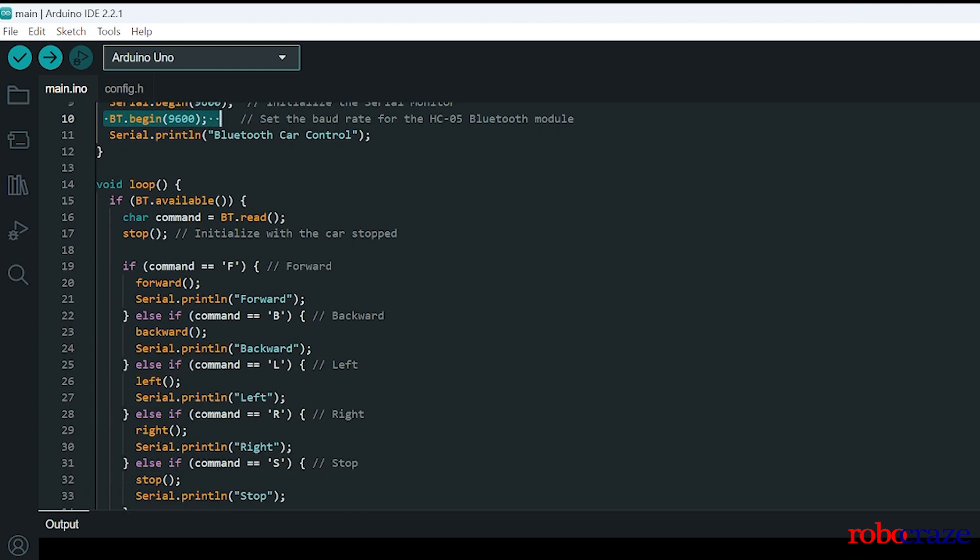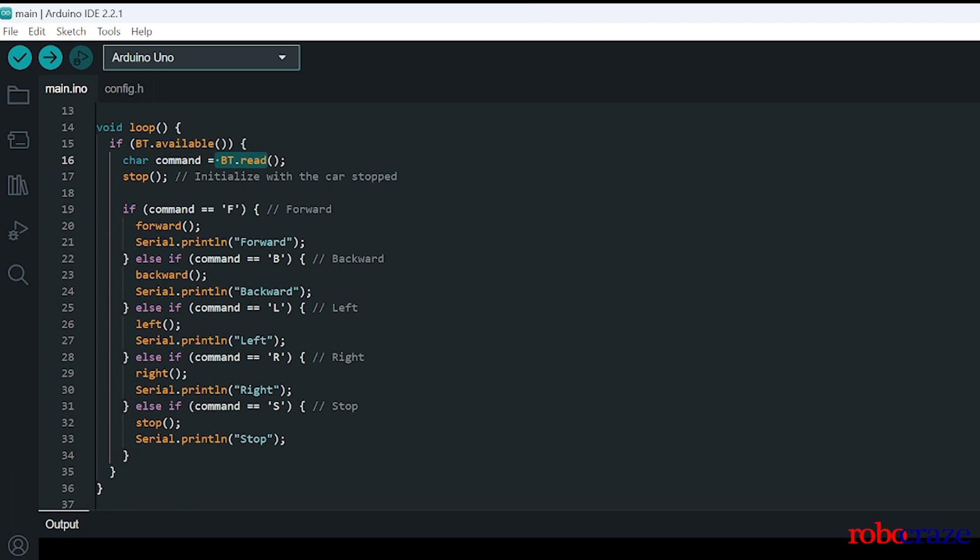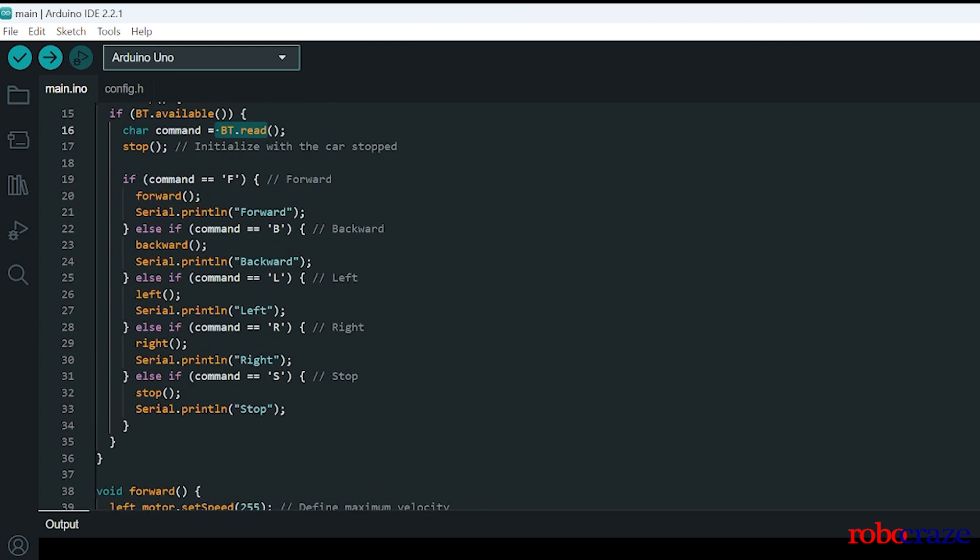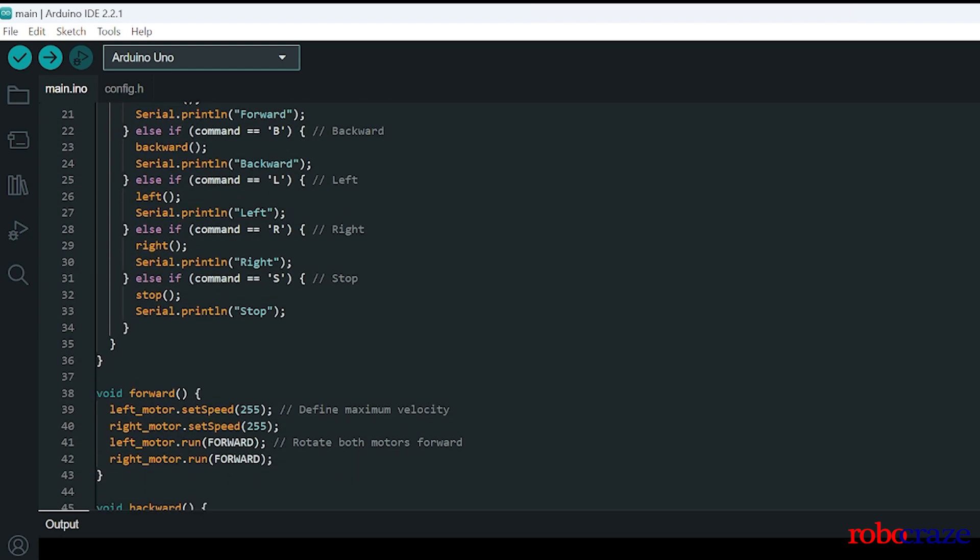Next we will be running in the loop. We will be continuously reading the Bluetooth data whenever it is available. So whenever it is available we'll read the character and we'll see what that character is. If the character is F then the bot will run forward. If it is B, backward, and same is for left and right, L and R.